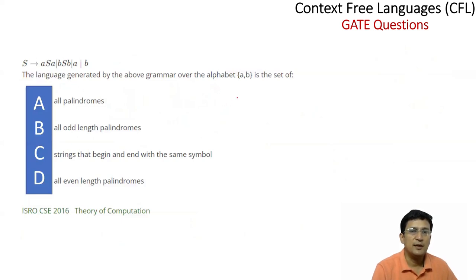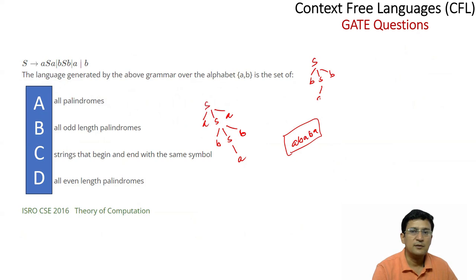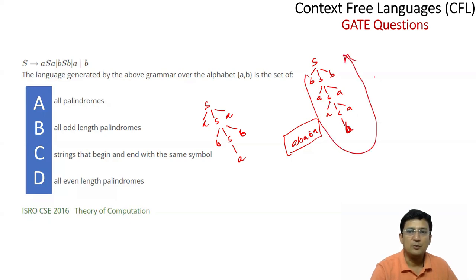The next question asks about the language generated by a grammar over some alphabet. The grammar has S → ASA | BSB | A | B. If we expand S → ASA with inner S → A, we get A, A, A — a palindrome. Expanding S → BSB, then S → ASA gives B, A, S, A, B. With S → small 'a', this gives a 7-length palindrome: B, A, A, A, A, A, B. So this grammar generates odd-length palindromes.